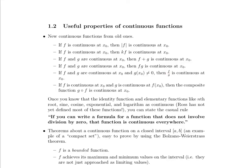What's interesting is once you know the identity function and elementary functions, like the nth root of a particular variable, sine, cosine, exponentials, logarithms, etc., are all continuous, you can state this casual rule, which is very helpful: if you can write a formula for a function that does not involve division by zero, that function is continuous everywhere.